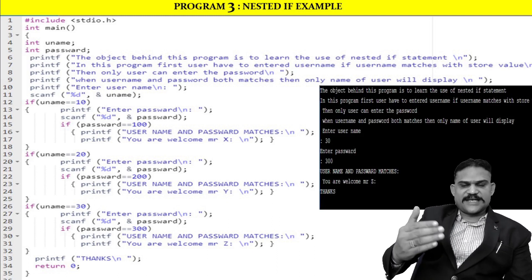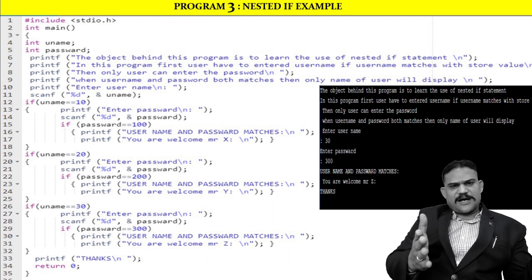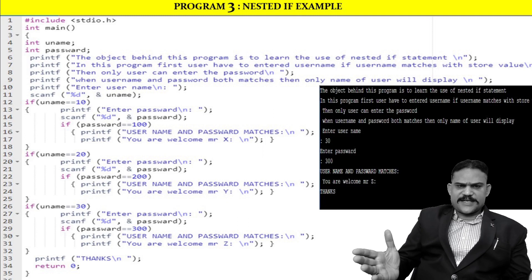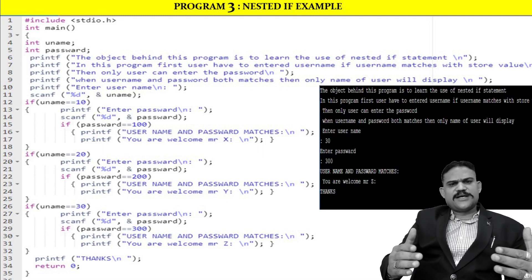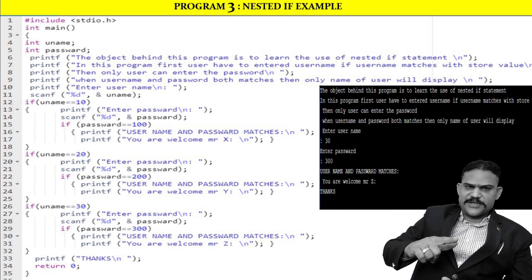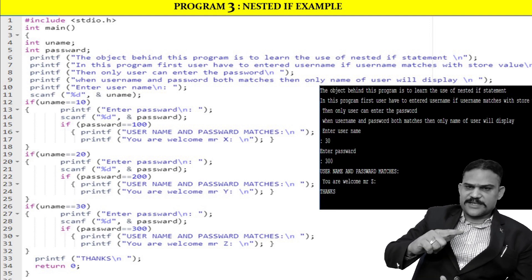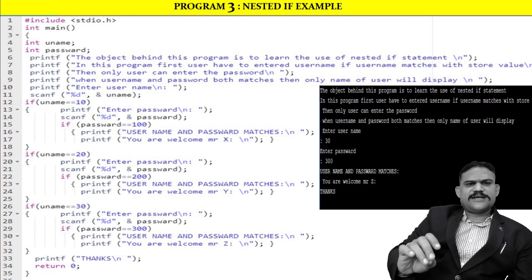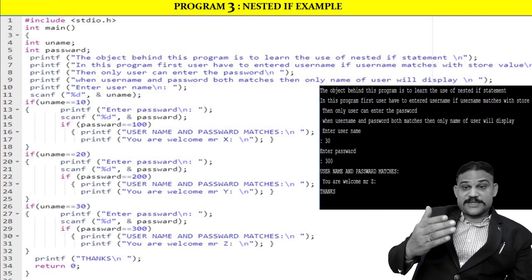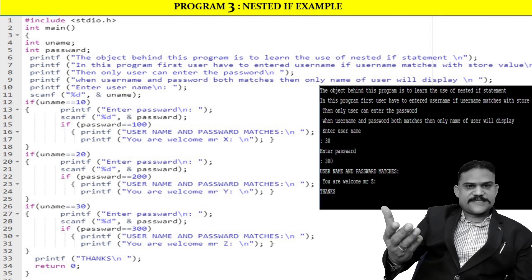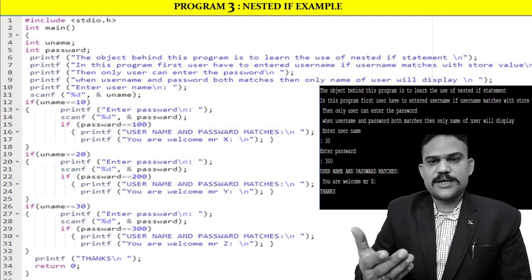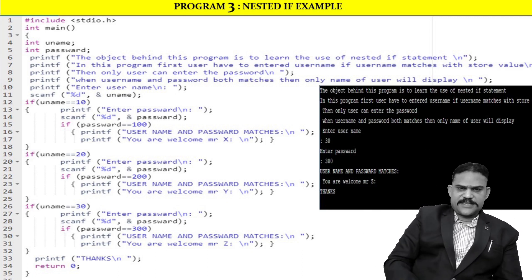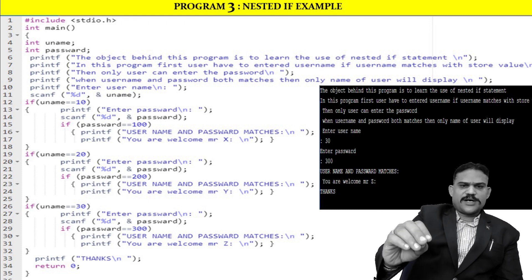You can copy this program and run it in the C compiler. Three messages can be displayed: 'You are welcome Mr. X', 'You are welcome Mr. Y', and 'You are welcome Mr. Z'. If you enter username 10 and password 100, the message will be 'you are welcome Mr. X'. If username 20 and password 200, message is 'you are welcome Mr. Y'. If username 30 and password 300, message is 'you are welcome Mr. Z'.